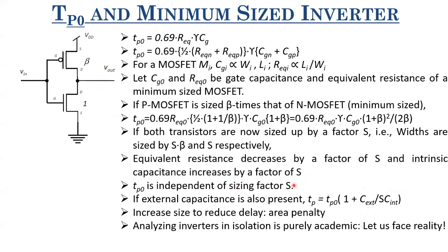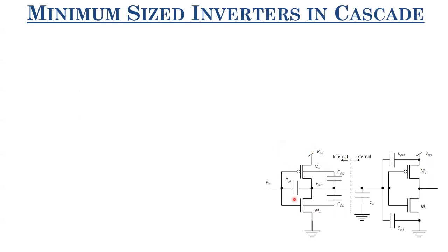Analyzing inverters in isolation is purely an academic exercise. Whatever we had been doing is not the realistic scenario. Now in this lecture, we will be facing the reality - looking at how exactly these inverters behave when we consider a chain of inverters or different logic gates being driven by an inverter. Let us first analyze minimum size inverters in cascade. We have a minimum size inverter with PMOS width β and NMOS width 1, driving another minimum size inverter of the same dimensions.